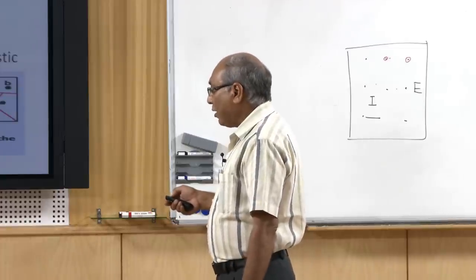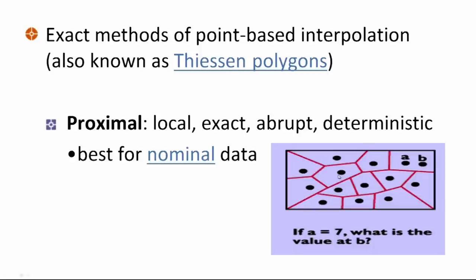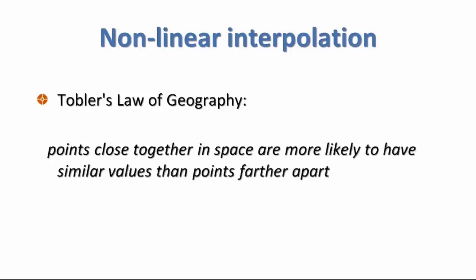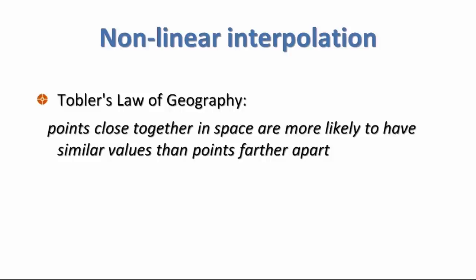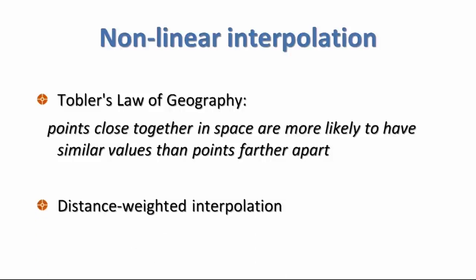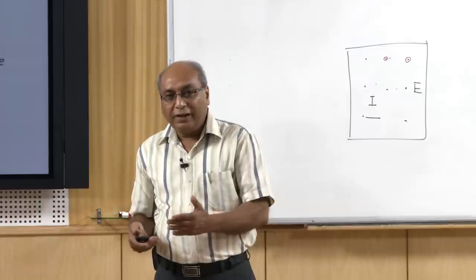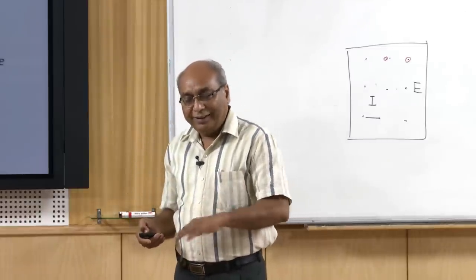Non-linear interpolation based on Tobler's law uses a distance-weighted approach. The example is IDW (Inverse Distance Weighted): the closer the distance to an existing observation, the more influence it has; the further, the less. This inverse relationship is why it is called inverse distance weighted. IDW estimates cell values by averaging the values of sample data points in a neighborhood of each processing cell, where the closest point has the most weight.